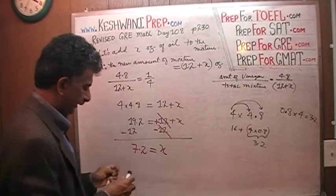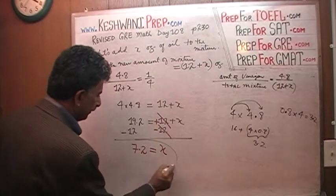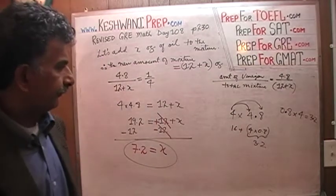4 times 4.8 is 16 plus 4 times 0.8, which is 3.2. So 16 plus 3.2 is 19.2. Subtract 12 from both sides and we're done. X equals 7.2. That's it. We're done. X equals to 7.2. That's all.